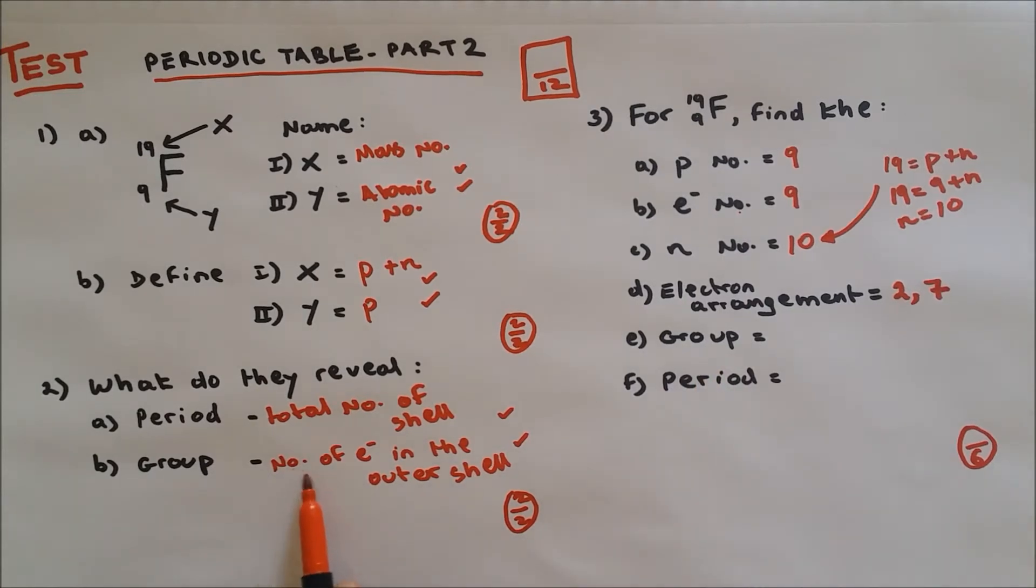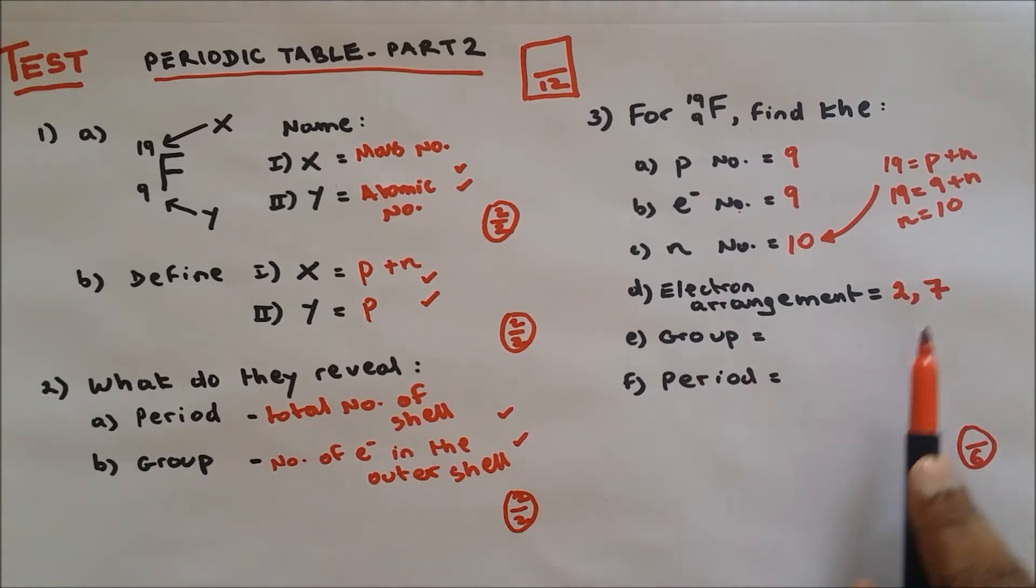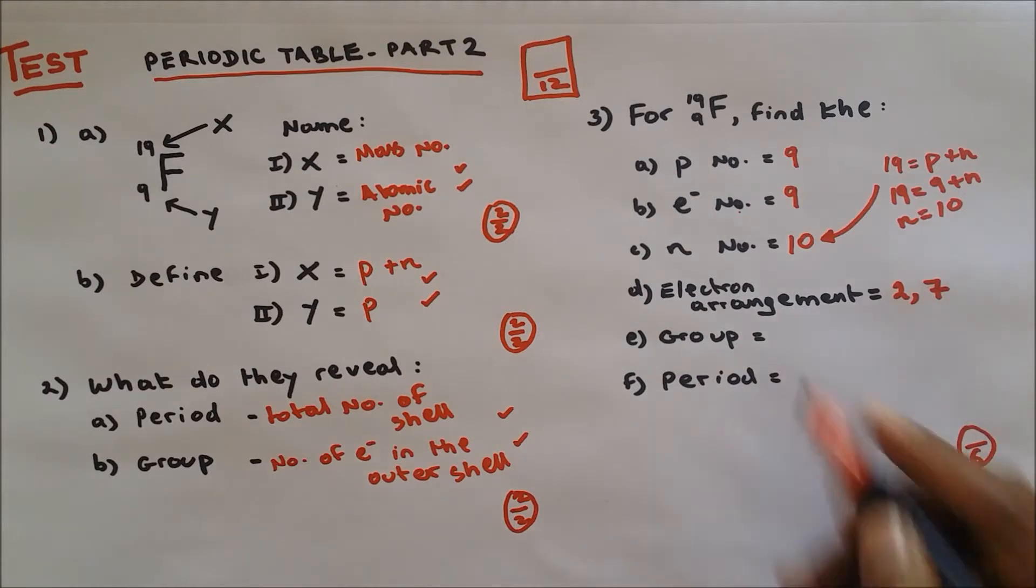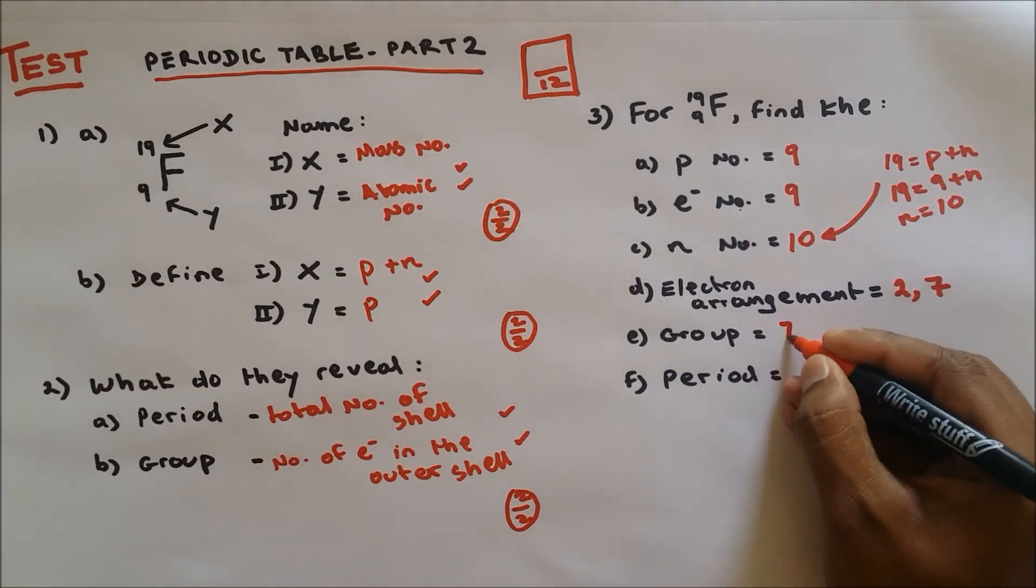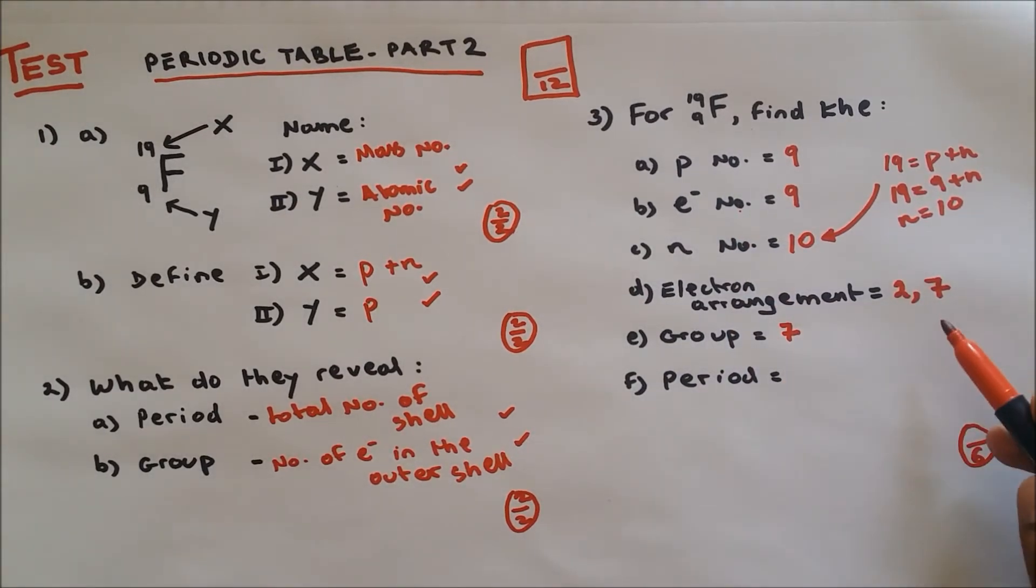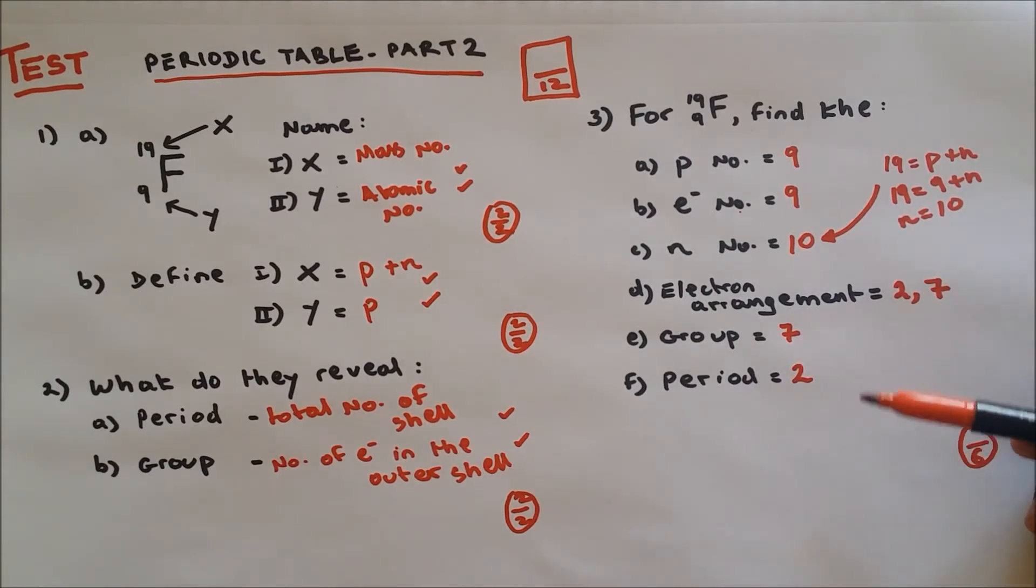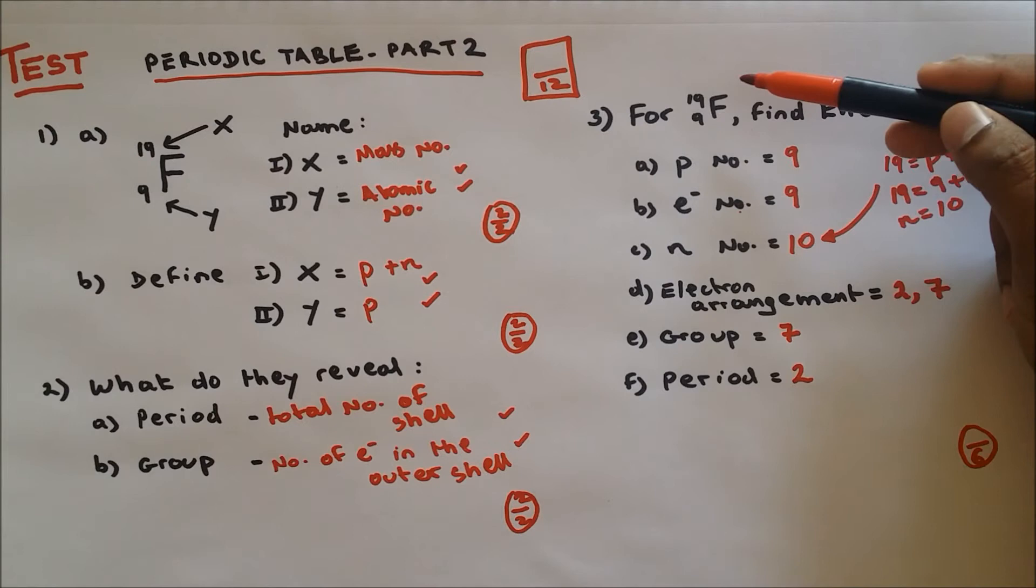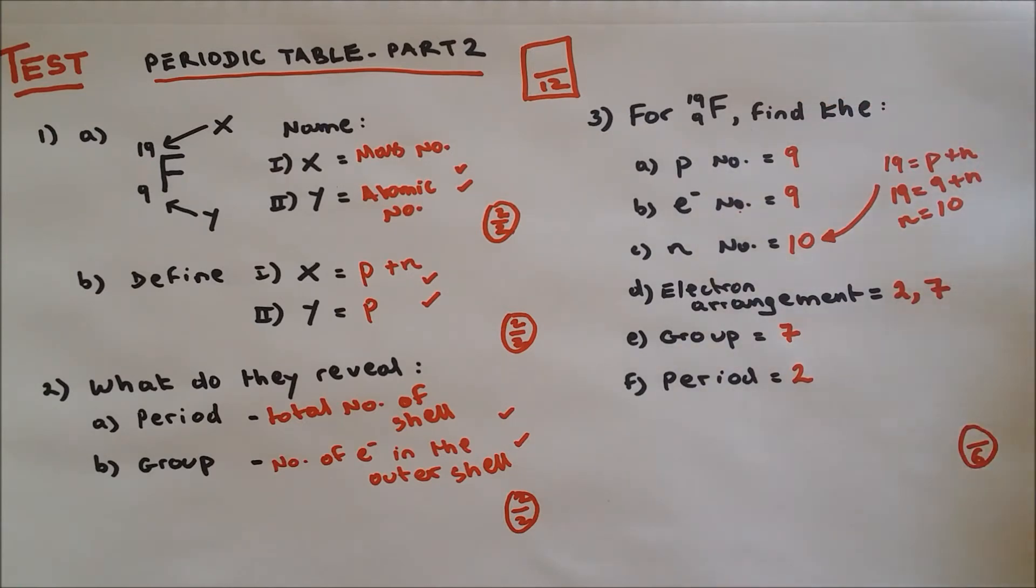Group is the number of electrons in the outer shell. In the outer shell we got 7, so fluorine is found in group 7. Period, total number of shells. We got two shells, so period is 2. Check it in the periodic table, you'll find fluorine on the second period and group 7.